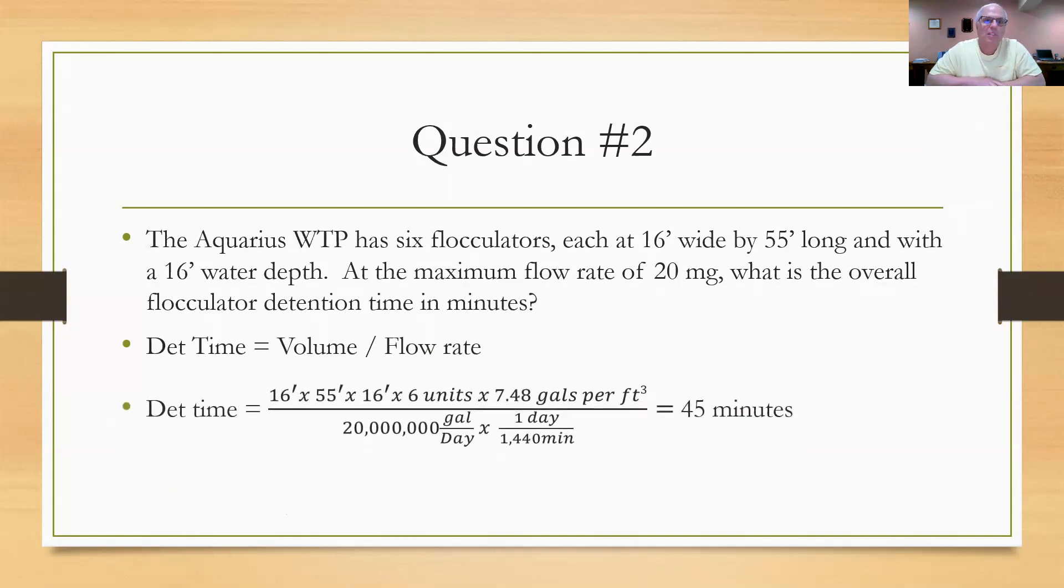There we go. I set up the detention time problem as 16 feet by 55 feet by 16 feet times the fact that there are six units. Now in this one, since they're asking me for minutes, I've decided to change the cubic feet in the numerator to gallons per cubic foot or 7.48 gallons per cubic foot. So I multiply by 7.48. I'm going to take the bottom and change that into something that works for gallons per day into gallons per minutes. To do that, I can divide the 20 mgd after I wrote it out that way.